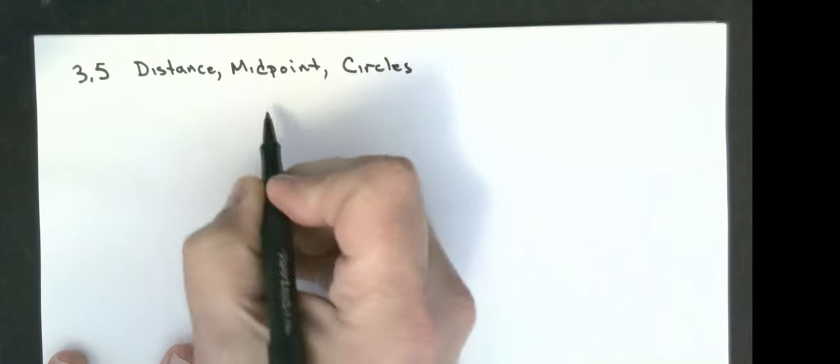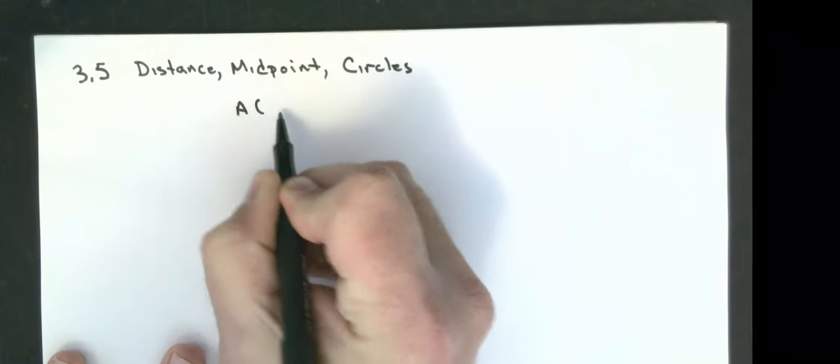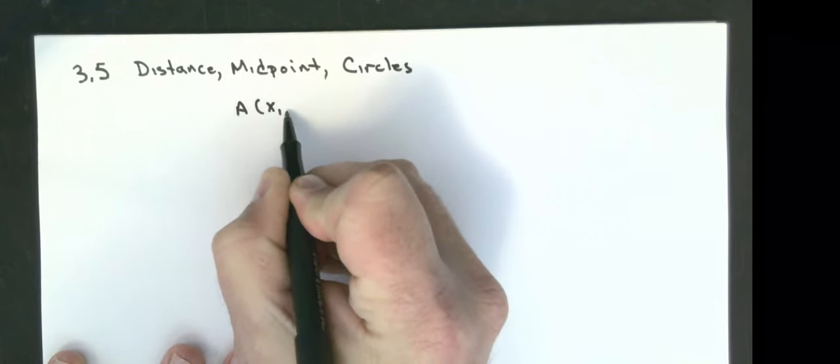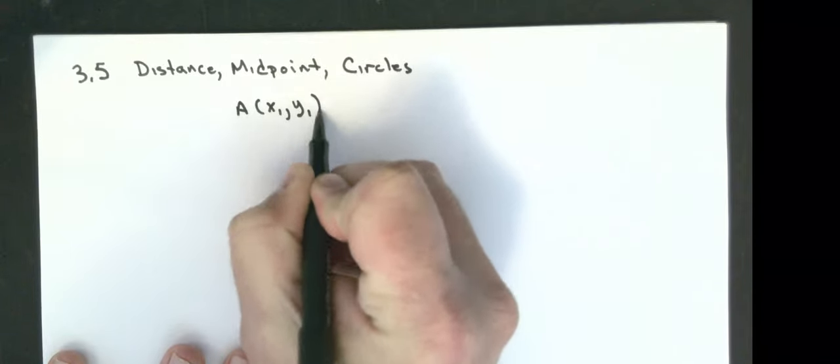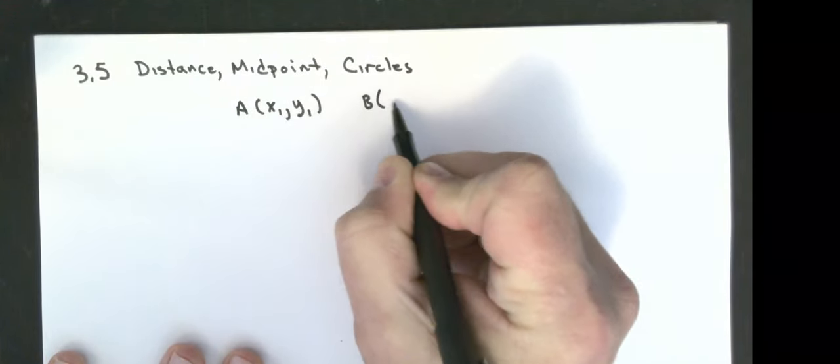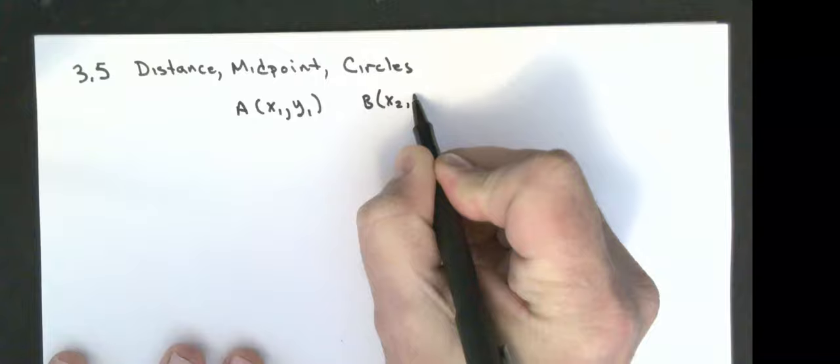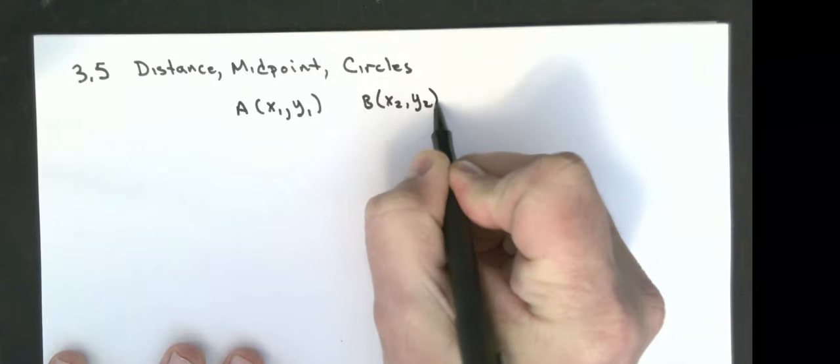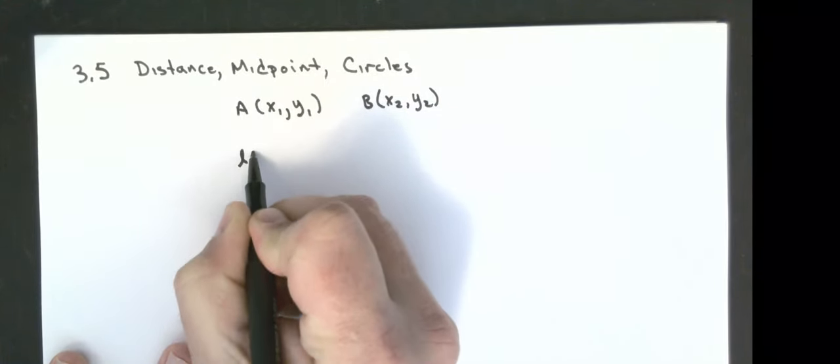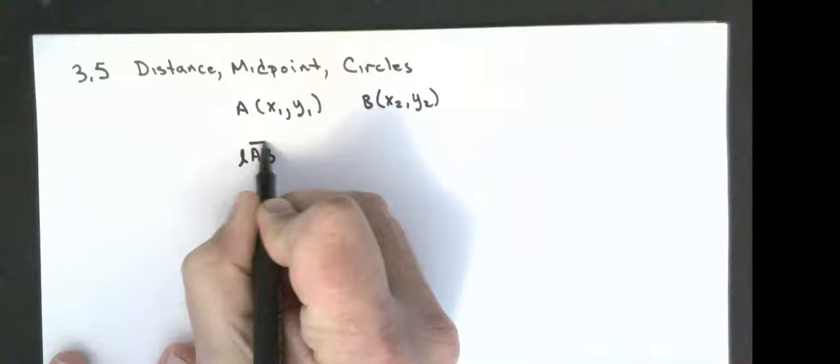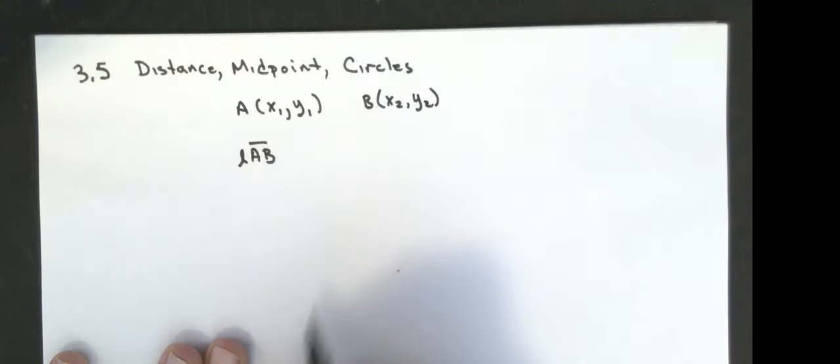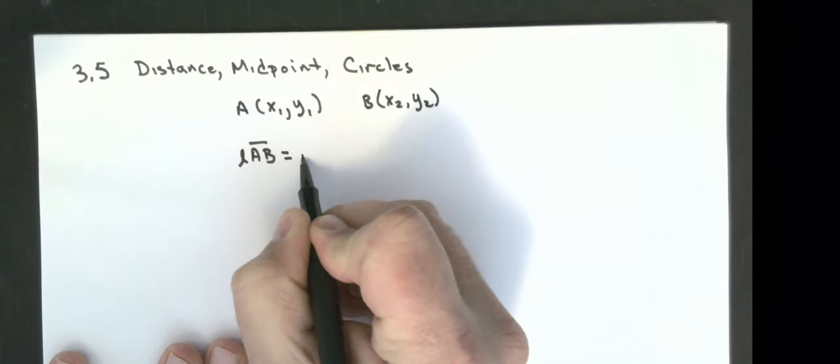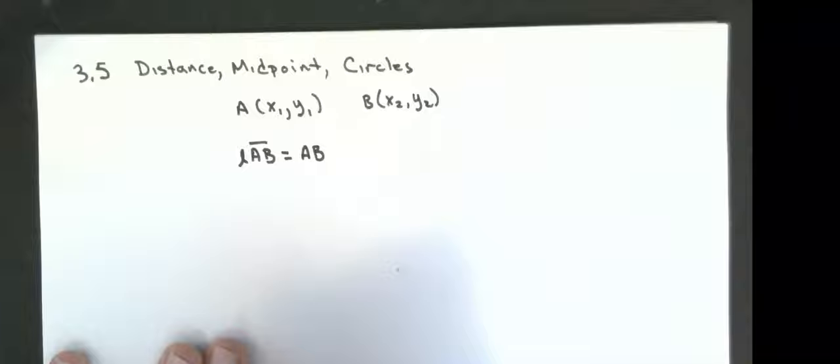So if I have any two points, A and B, I'm going to call the coordinates of point A, x1 comma y1, and the coordinates of point B, x2 comma y2. The length of segment AB, I can either write it that way, or I can just write the AB without the segment bar and without the L, they mean the same thing.